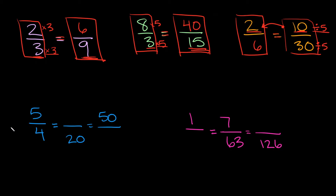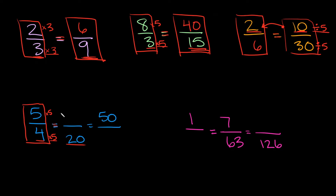Now let's go to this fraction down here. Remember we always want to start with the one that we have — the completed one. Here that would be five over four. So five over four is equal to something over twenty. In order to get from four to twenty you would have to multiply by five. So if we're going to multiply by five down here we also have to multiply by five up here. What is five times five? That's 25. So five over four is equal to 25 over 20.